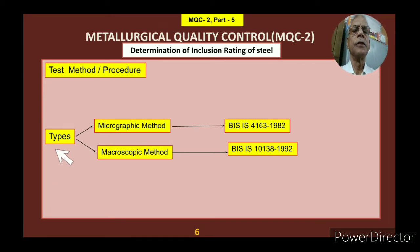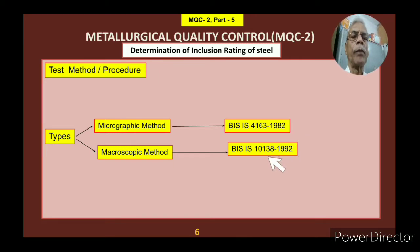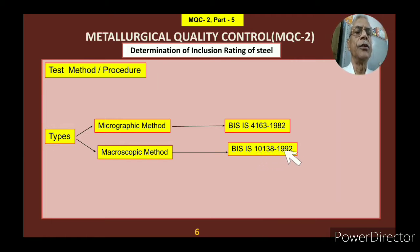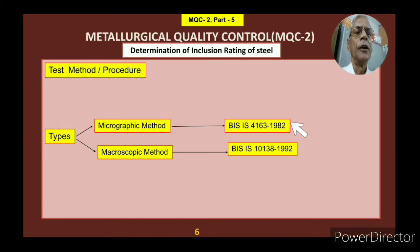Test method and procedures — there are two types. The micrographic method follows IS 4163:1982 (Indian Standard). For the macroscopic method, it is BSIS 10138:1992. You can refer to these standards in detail. As mentioned earlier, I will be covering only the micrographic method in this video.